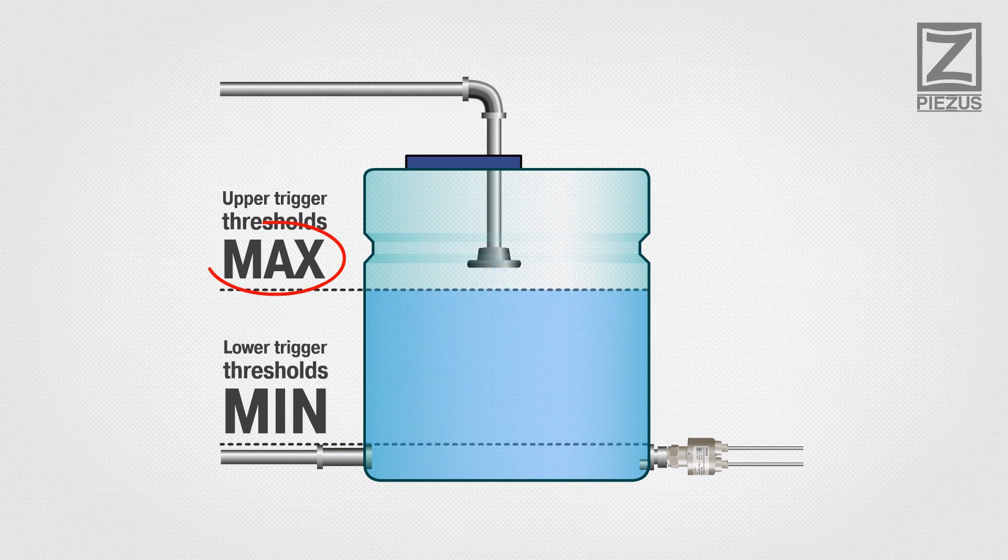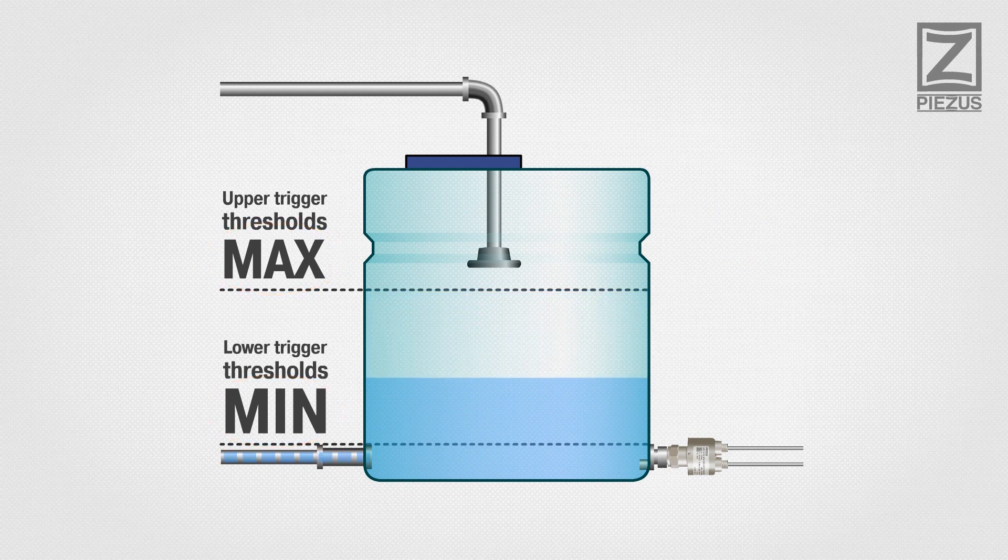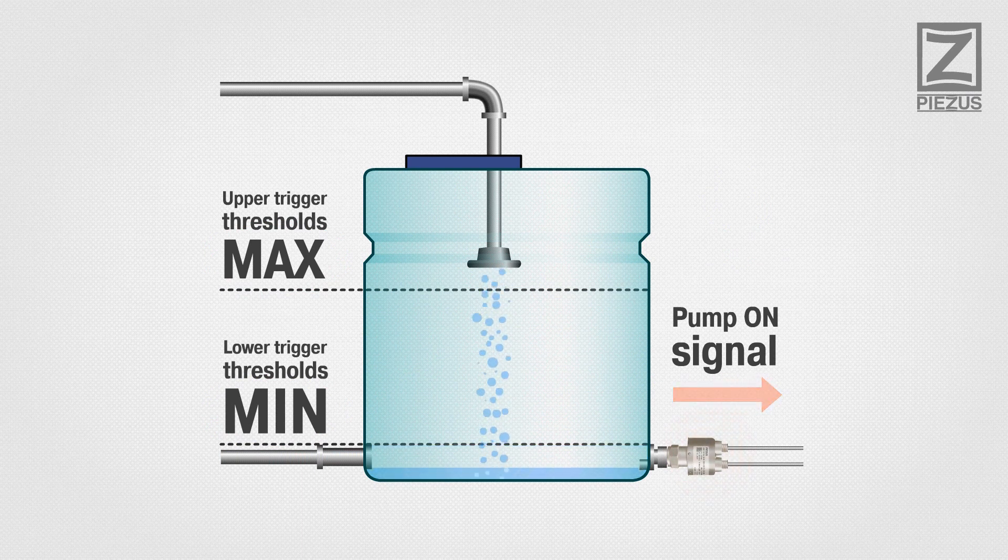The switch has upper and lower trigger thresholds. Pressure switch can be used to switch the pump on or off when the liquid level reaches the lower or upper limit.